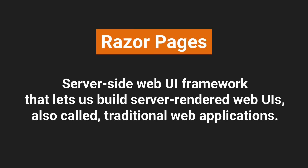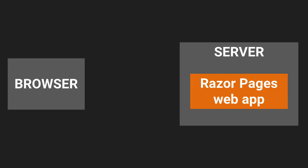Razorpages is a server-side web UI framework that lets us build server-rendered web user interfaces, also called traditional web applications. We build a Razorpages web app and host it on a server. The browser sends a request to the server, which is routed to a Razorpage endpoint. It executes on the server to produce a web UI consisting of static HTML, CSS, and maybe some JavaScript. That HTML is sent back to the client browser, which displays it as a web page.